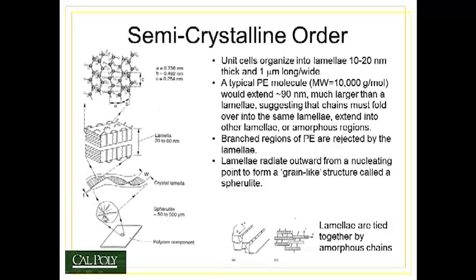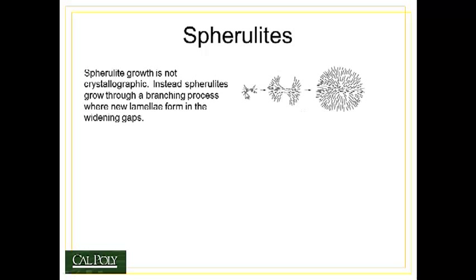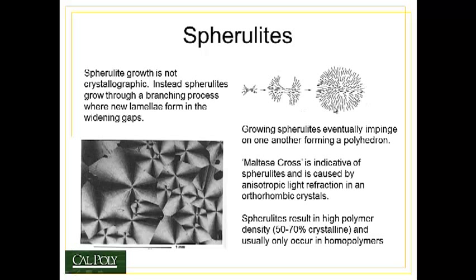The lamellae radiate outward from a single origin point — a growth point in the lamellar structure. Ultimately they form a sphere-like structure that looks very similar to a grain, but does not grow according to crystallographic orientation; rather it radiates outward from a single point. This structure is known as a spherulite, and spherulites are about 50 to 500 micrometers in diameter. Spherulites grow in this radial pattern as individual lamellae form by nucleating in the gaps between the previous two lamellae. As they spread out they form gaps between themselves, so another lamellae will grow into that gap, gradually spreading out until eventually it forms a sphere-like shape.